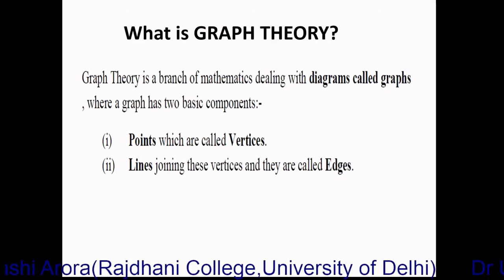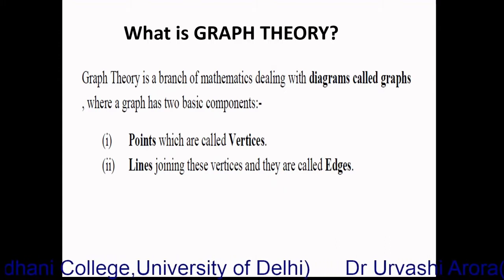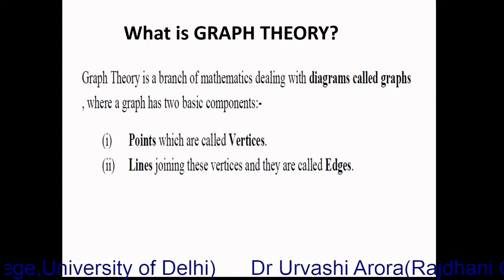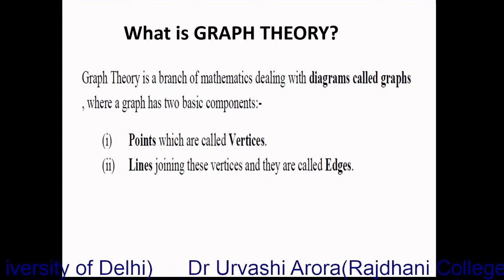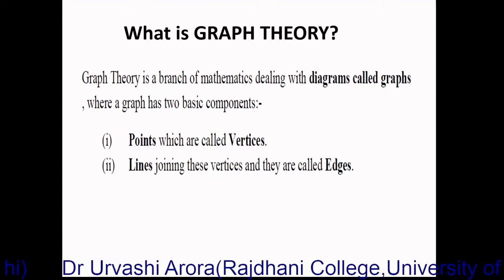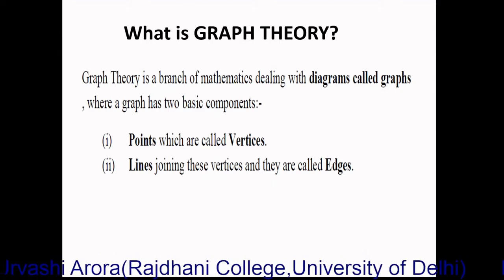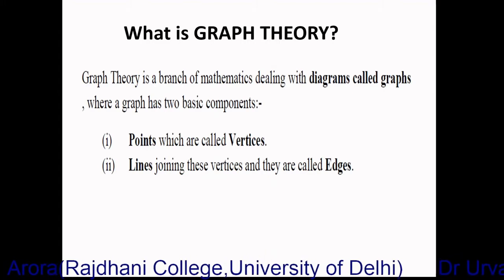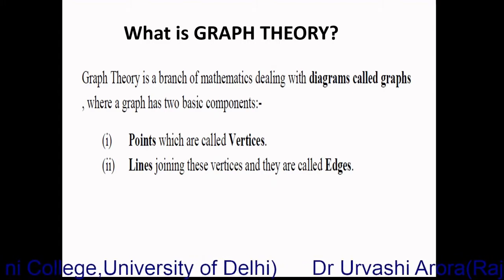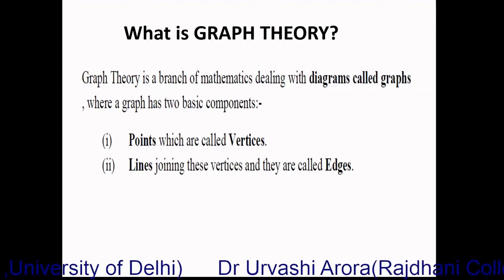Graph theory is a branch of mathematics which deals with diagrams called graphs. As far as a graph is concerned, a graph has two basic components: vertices and edges. Vertices are points and edges are lines joining those points. Whenever you take a graph in graph theory, it will always have these two basic components — vertices and edges.